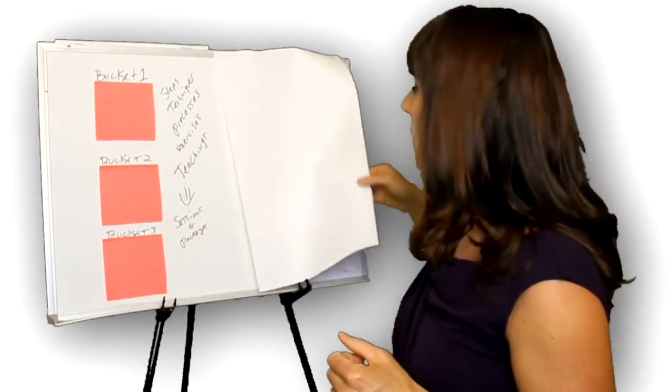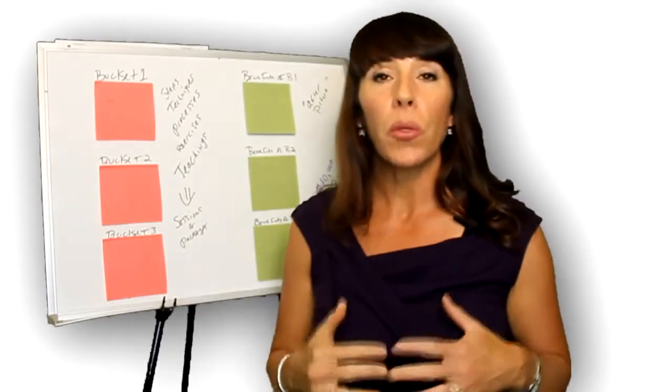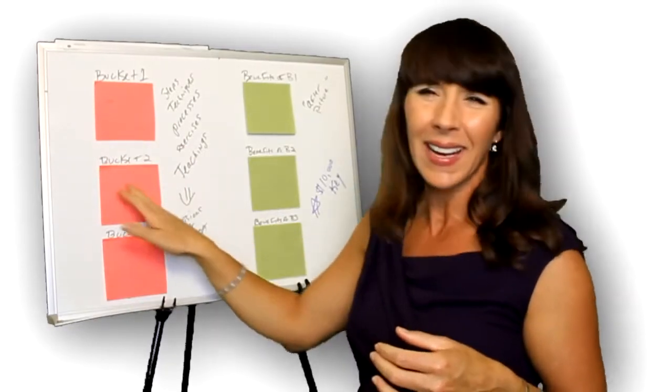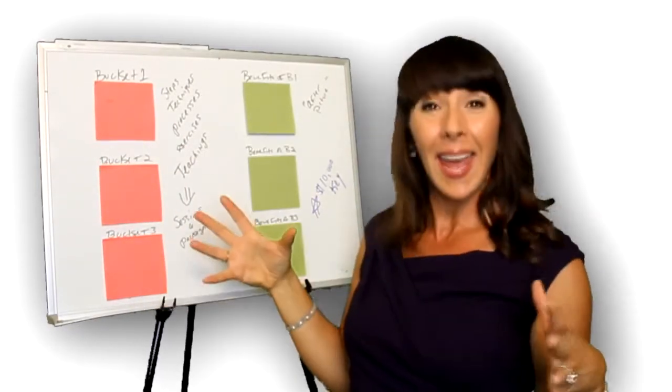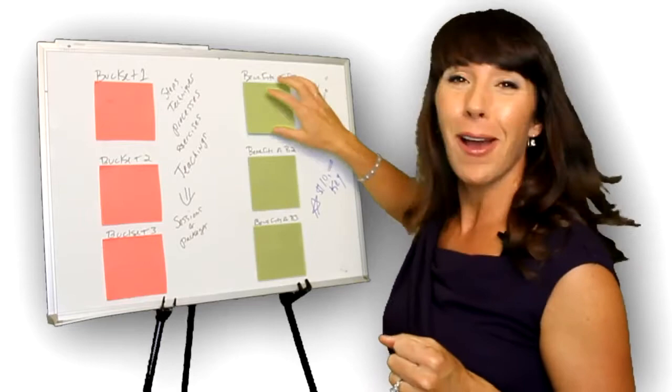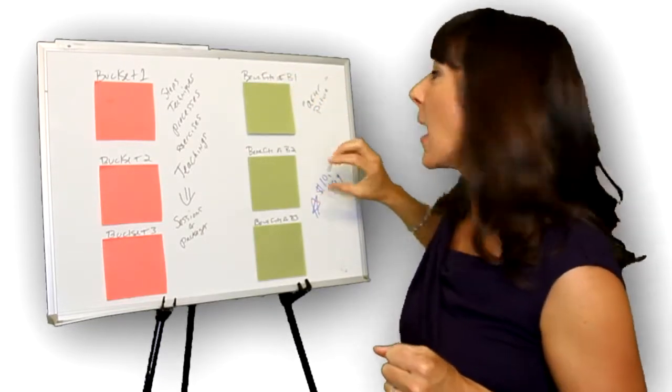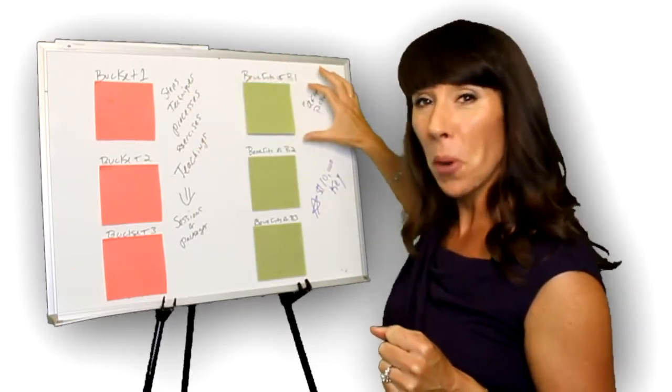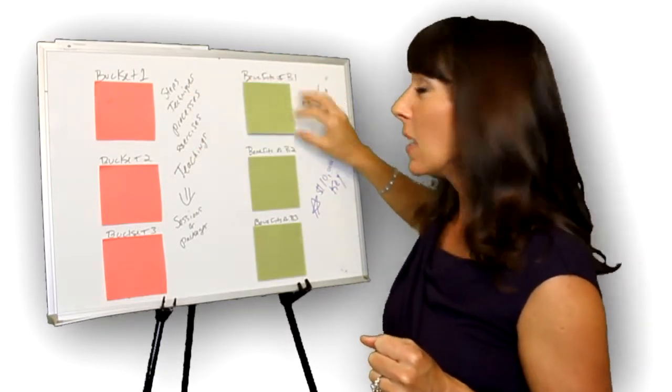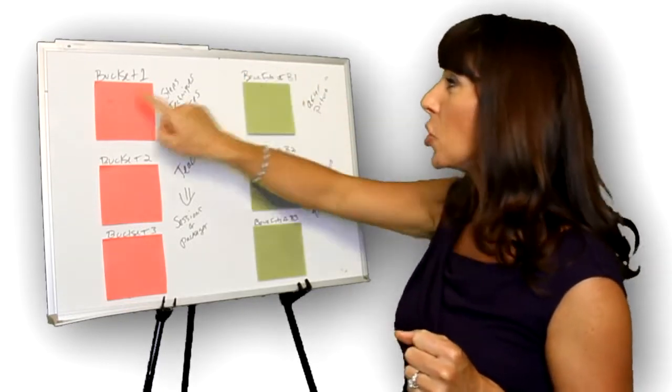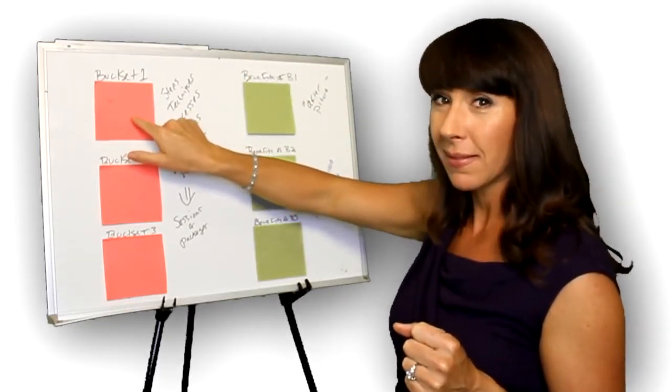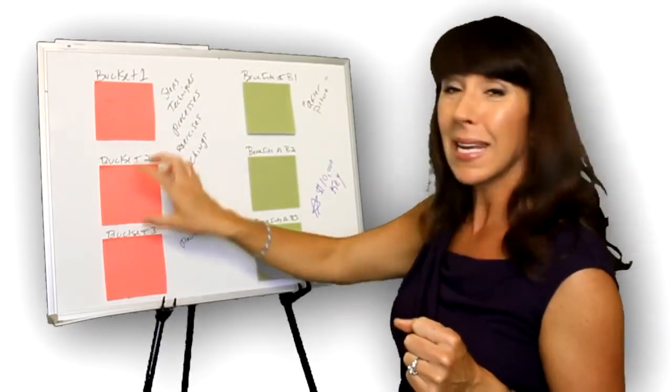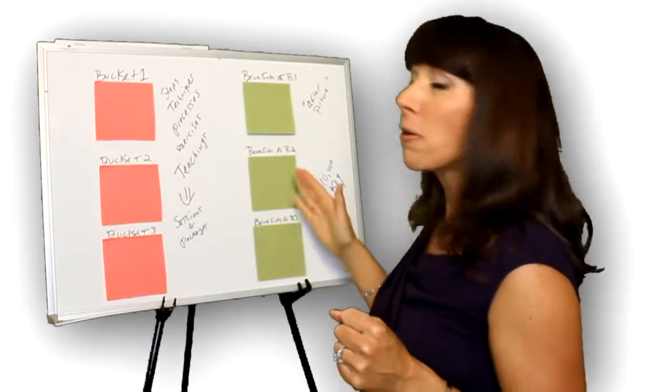Because what you have to do next is add the benefits. We're so used to talking about this because we love this. Oh, we could live here, we could talk about this all day. We're not as used to talking about the amazing benefits. And that's exactly what you have to do in this step. Each bucket now has its own post-it note of benefits. So here, what are the benefits of just what's in this bucket? What are the benefits of just what's in this bucket? All the techniques and processes, what are the benefits of those?